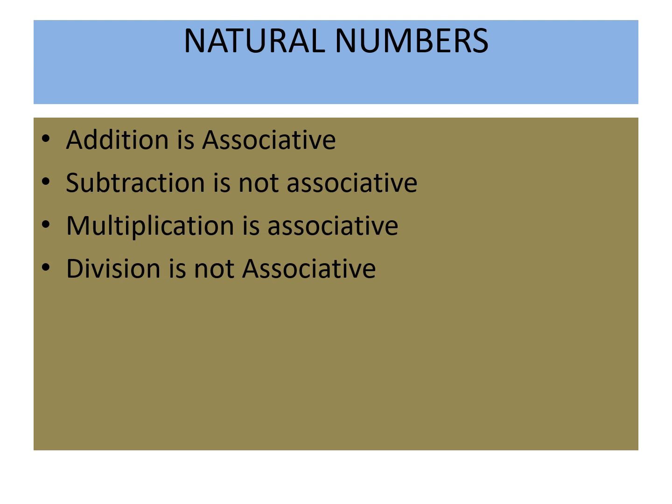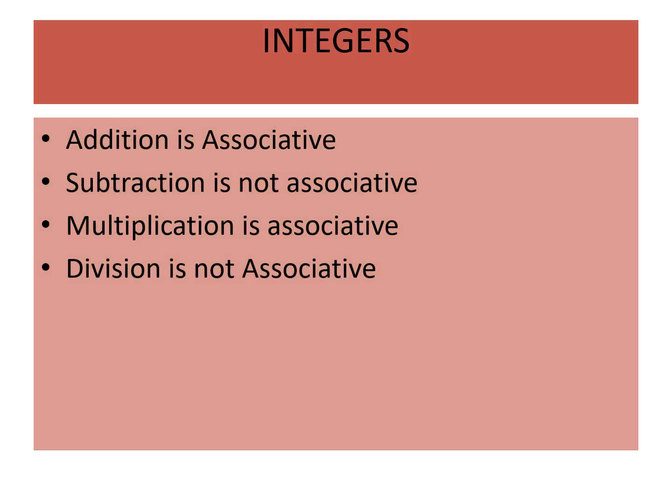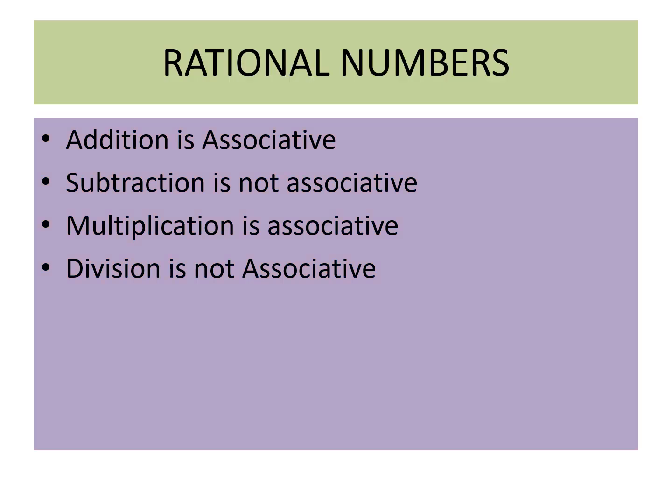For natural numbers, addition and multiplication are associative, and subtraction and division are not. Children, you will work out examples for natural numbers, integers, and rational numbers and submit them as an assignment at the end of this session. Take three rational numbers and check the associativity for all four basic operations.